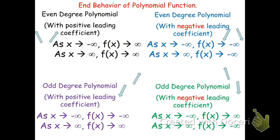You need to memorize these rules. Even degree polynomials both go in the same direction — positives go up, negatives go down. Odd degree polynomials go in different directions. If it has a positive leading coefficient, as x goes to negative infinity, f of x also goes to negative infinity — the signs match. As you go to the positive x's, it goes to the positive y's. If you put a negative leading coefficient, it just reverses the directions.